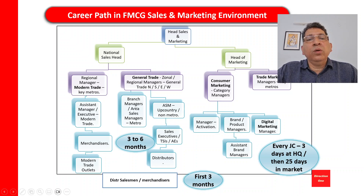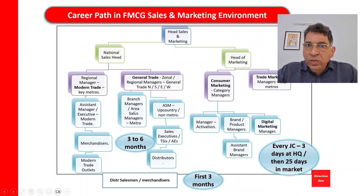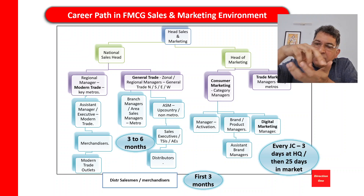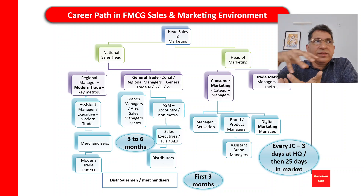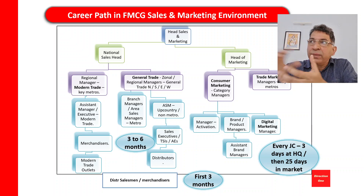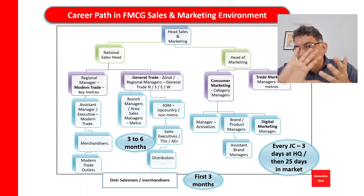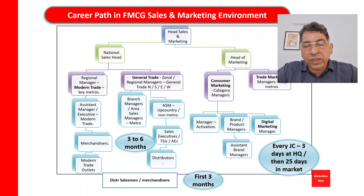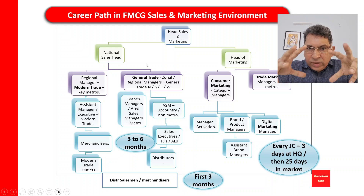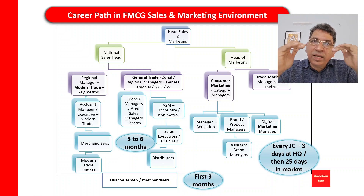There is an ASM metro and an ASM non-metro. The Pune area sales manager will handle Pune as well as surrounding areas like Nashik, Sangli, Satara, Karad, and Kolhapur. There might be another area manager based out of Nagpur handling Marathwada and Khandesh — Aurangabad, Akola, Amravati, Buldana — that kind of area. That's how the geographic structure is organized.